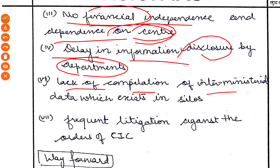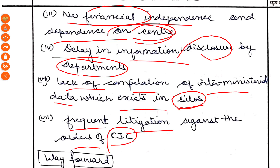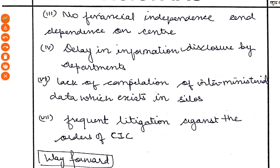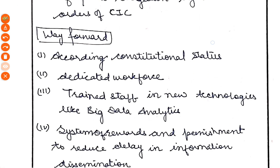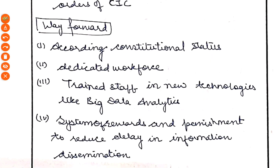There is also a lack of completion of inter-ministerial data, which exists in silos — meaning isolation. Different ministries work separately; their information and data are not integrated. There is also frequent litigation against the orders of the CIC — people file cases against its orders. These are the key issues.